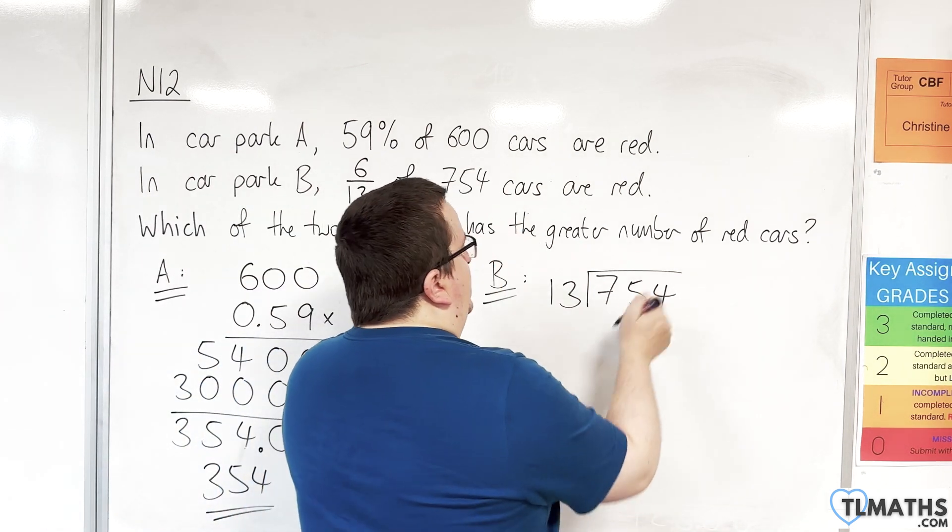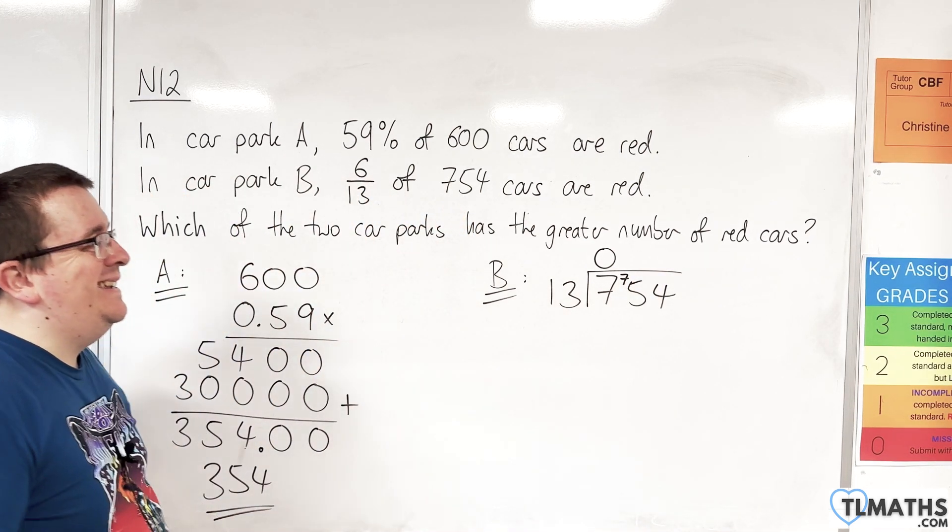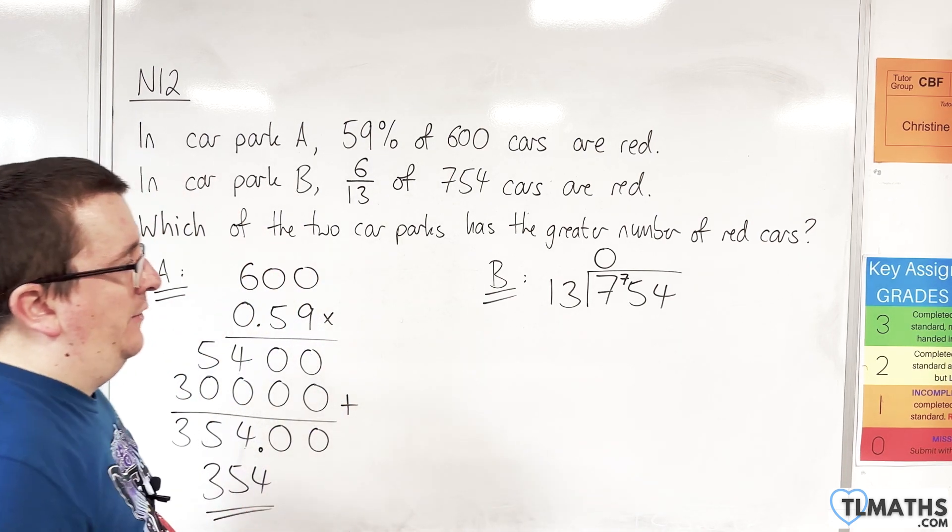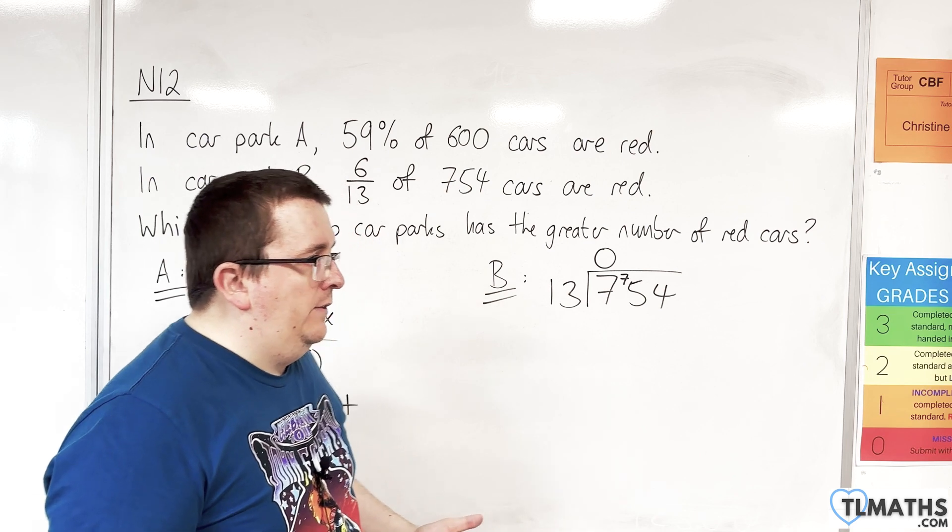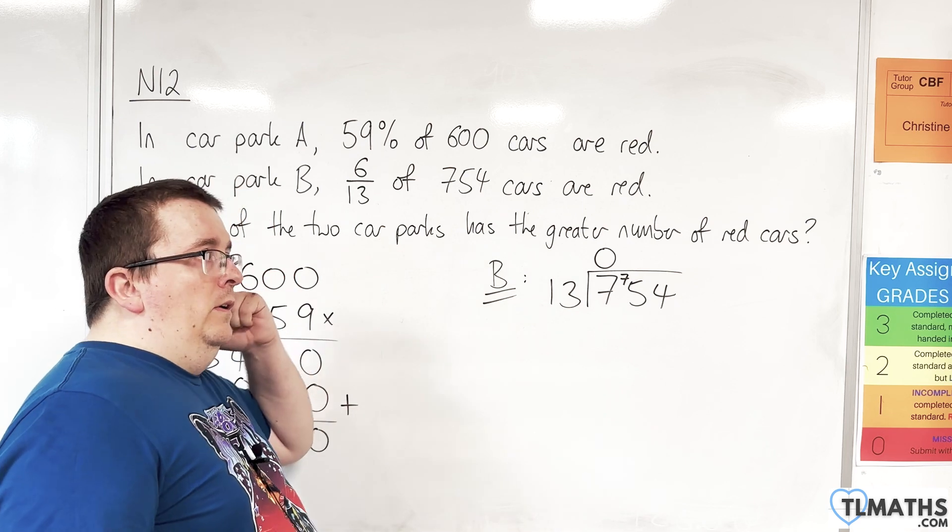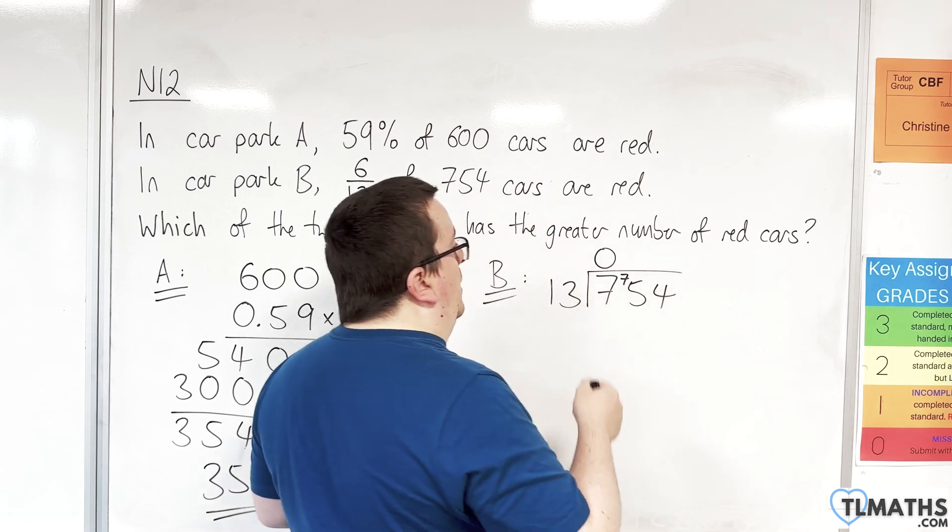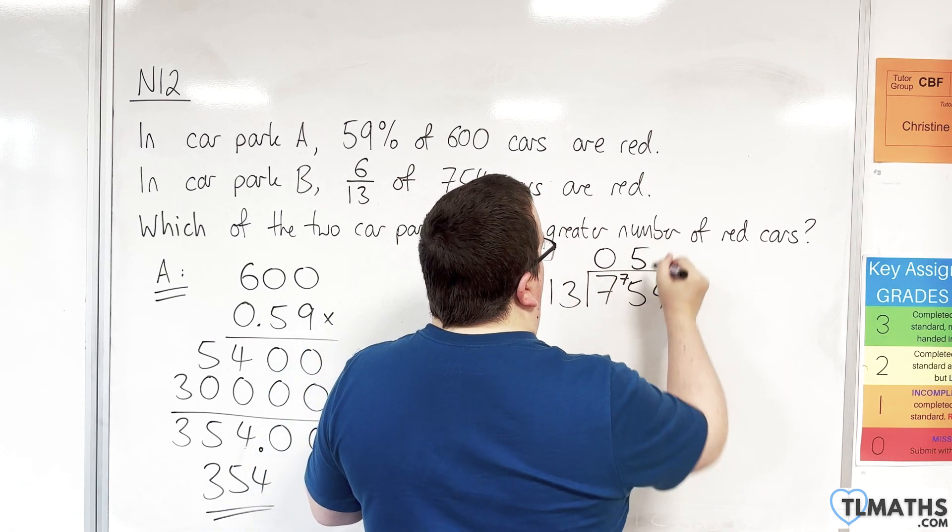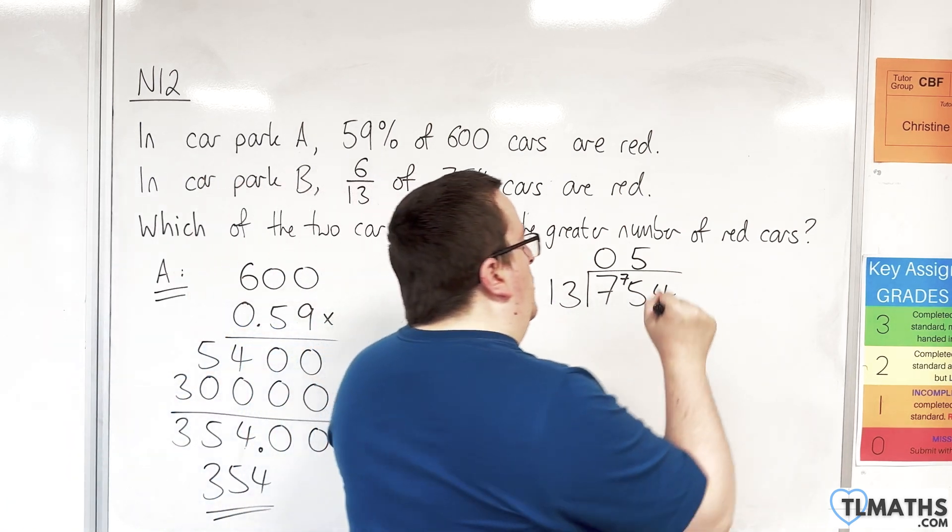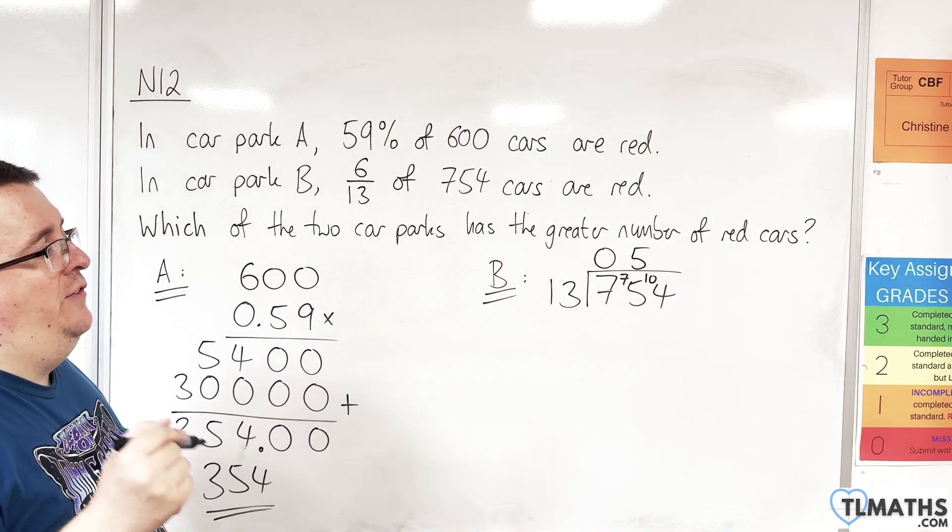13 into 7 goes 0, remainder 7. So 13 into 75. We're down to your 13 times table here. 5 thirteens are 65. 6 thirteens will be 78, so that means you can only fit 5 in. 5 thirteens are 65. We've got 10 remainder.